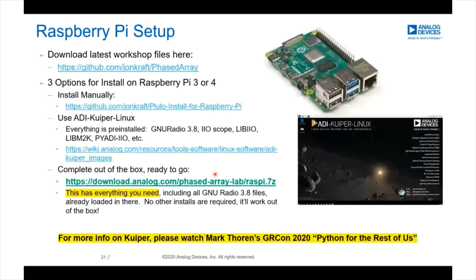Just download the image, install it directly to an SD card for your Raspberry Pi, and it'll all just work out of the box. For more background on these Pi installs, as well as how to use Python with GNU Radio and our ADI libraries, I highly recommend Mark Thorne's workshop called 'Python for the Rest of Us.' As we go through the labs, I'll explain the individual Python and the GNU Radio flow graphs.